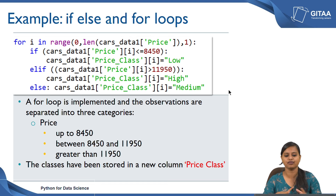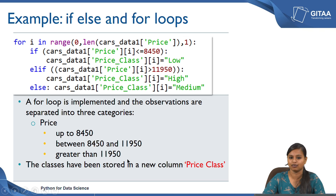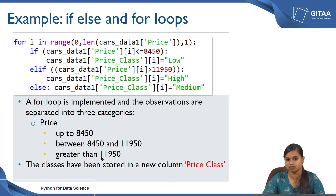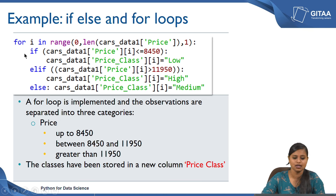To summarize what we have done with the for loop and if-else: a for loop is implemented and the observations are separated into three categories. Price up to 8450 is kept as low, between 8450 and 11950 is kept as medium, and whenever price exceeds 11950 it is kept as high. The classes have been stored in the new column called price_class, so each record in price_class will have a label of low, medium, or high based on the condition.